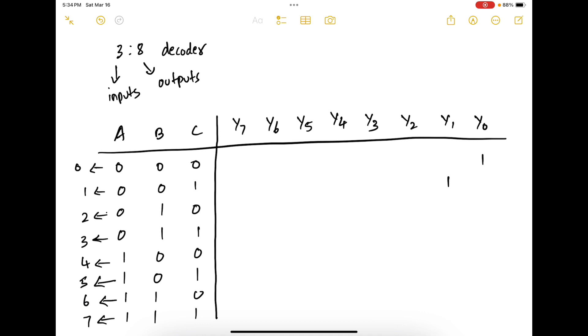Similarly, when A, B, C are 0, 1, 0, line 2 is activated. For 0, 1, 1, line 3 is activated, line 4 activated, and so on line 5, line 6, and line 7. The remaining are going to be 0.